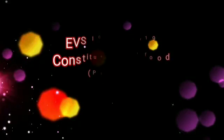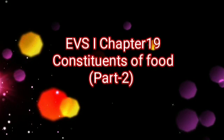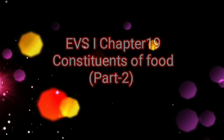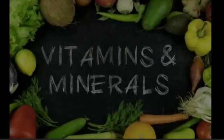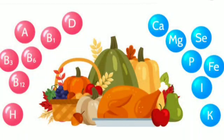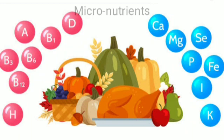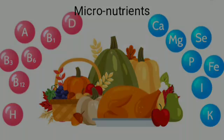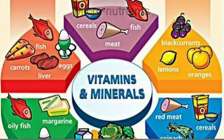EVS Class 1, Chapter 19: Constituents of Food. In addition to the macronutrients, we need certain food constituents in very small quantities. These micronutrients are Vitamins and Minerals.